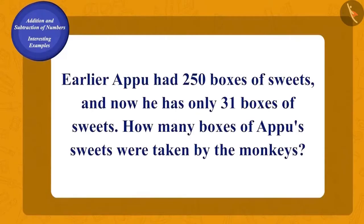Earlier, Appu had 250 boxes of sweets and now he has only 31 boxes of sweets. Can you tell how many boxes of Appu's sweets were taken by the monkeys?